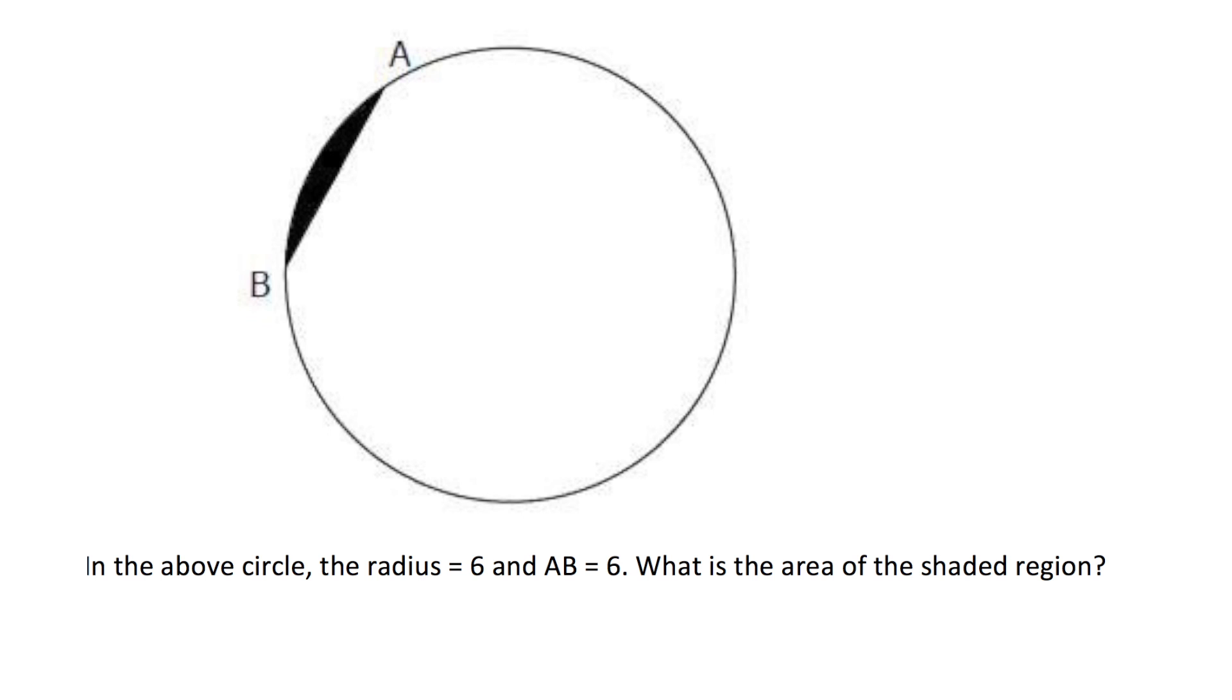Welcome back. This is an interesting one. The radius is 6, AB is 6. What is the area of the shaded region? Try this one on your own, hit the pause button, and then we will do it together.